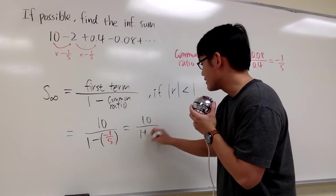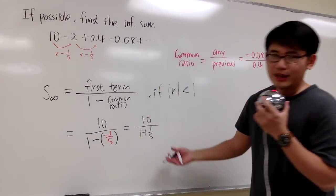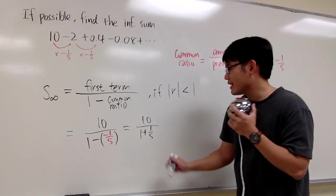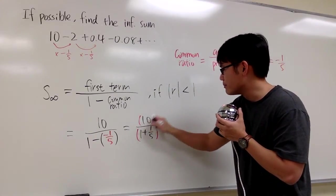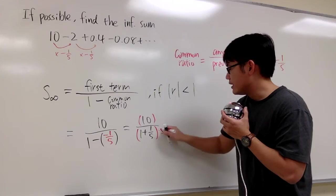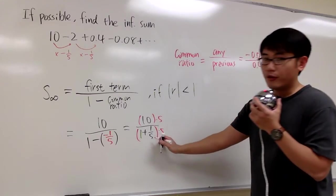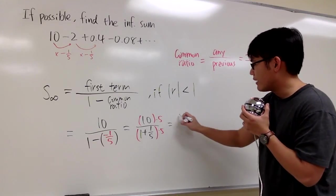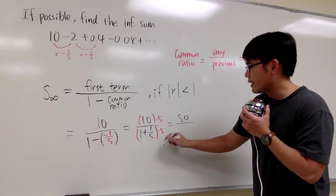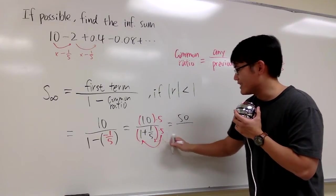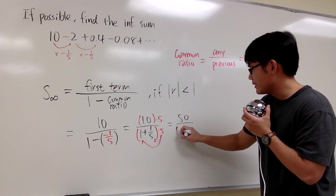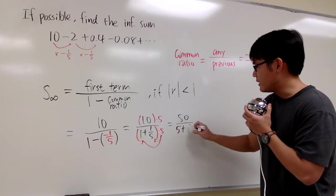Let's compute this. This is 10 on the top over—I'll write this as 1 plus 1 over 5. We have a complex fraction, so let's multiply top and bottom by 5, the lowest common denominator. We'll have 50 on top over, distributing: 5 times 1 is 5 plus 5 times 1 fifth is 1.